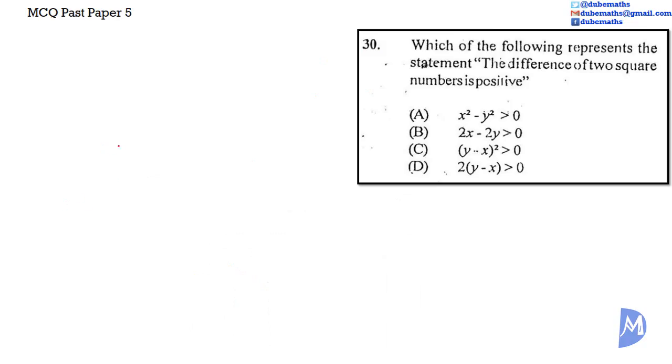The difference of two squared numbers is X squared minus Y squared. Its positive is the same as greater than 0. The answer is A.